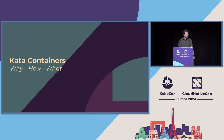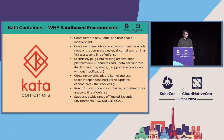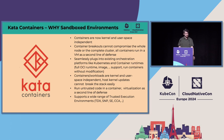So why have we chosen Kata? Containers are now kernel and user space independent, and host changes do not affect us much. Container breakouts cannot compromise the whole node or cluster because we're still running in a VM. We can seamlessly plug into existing orchestration platforms like Kubernetes, with full OCI runtime image support, and we can run containers without modification. We can run untrusted code because we have virtualization as a second line of defense. Kata supports a wide range of trusted execution environments like Intel TDX, AMD SEV, ARM CCA, and S390 secure enclaves.